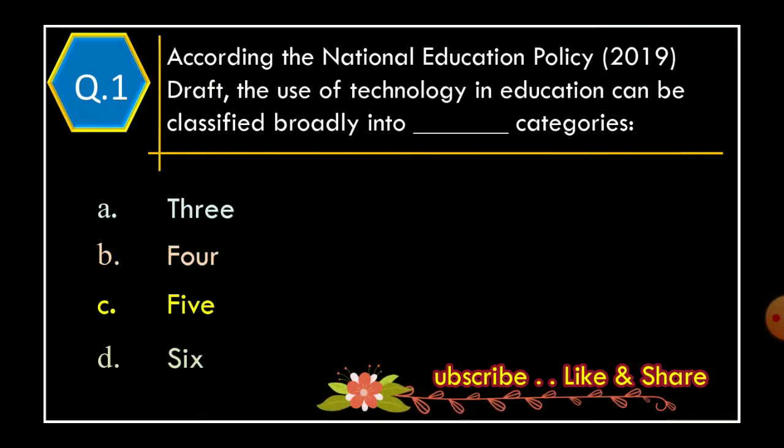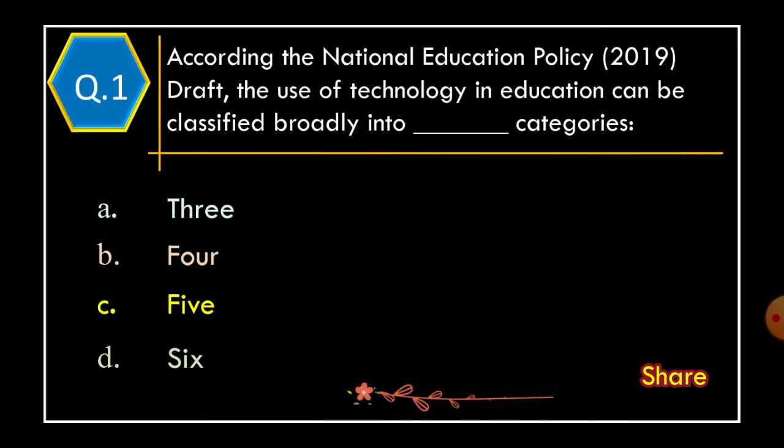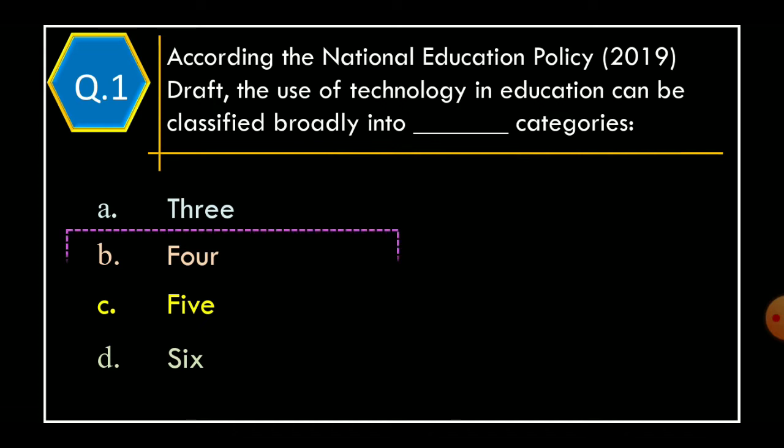According to the National Education Policy 2019 draft, the use of technology in education can be classified broadly into how many categories? Option A: 3, Option B: 4, Option C: 5, Option D: 6. The correct option is Option B: 4.